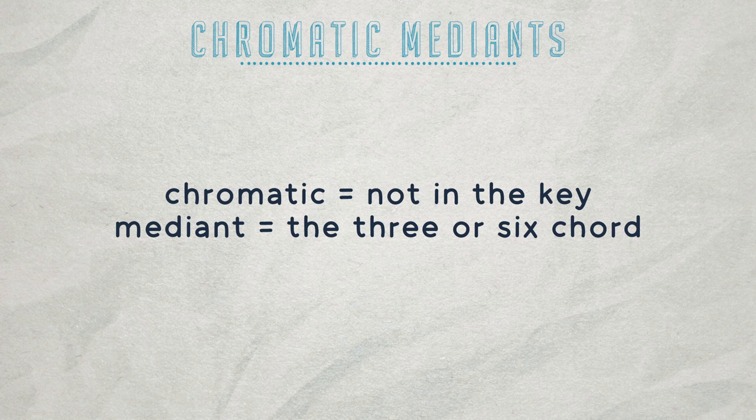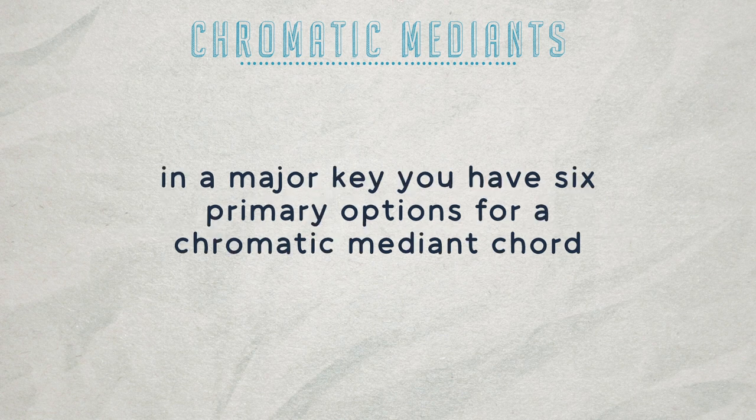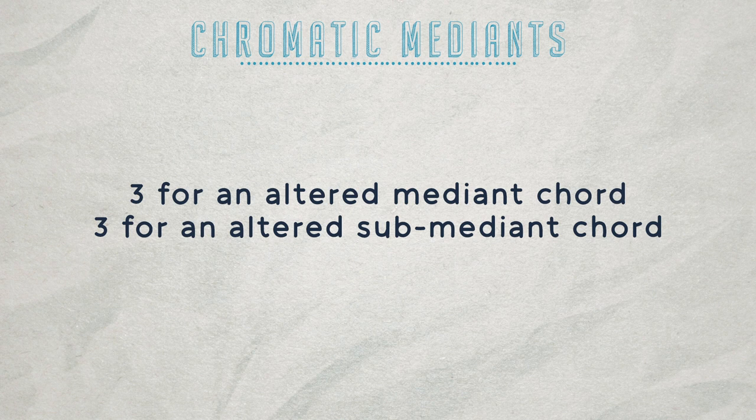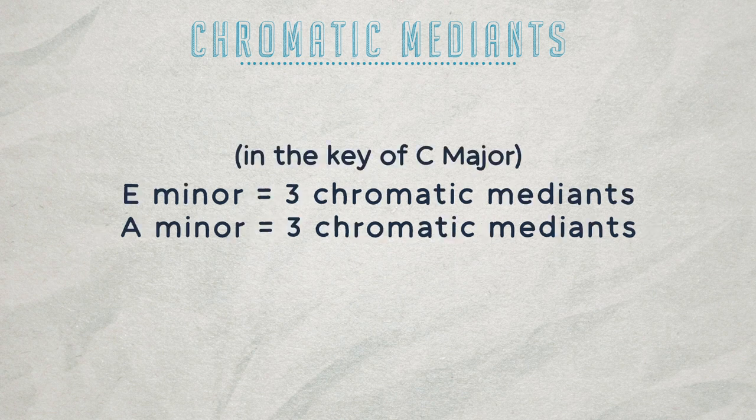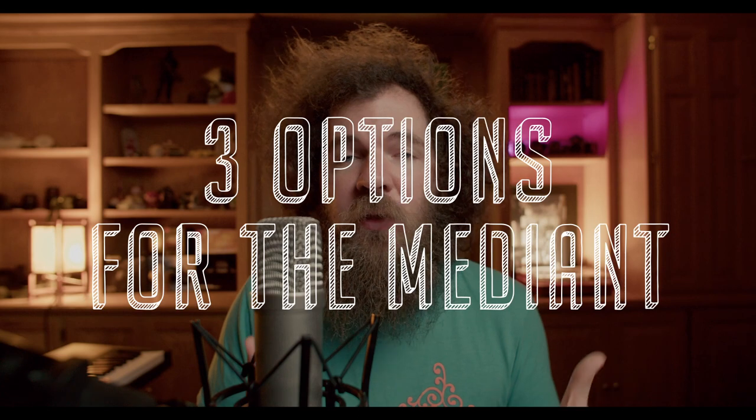Chromatic means not in the key. Mediant means the three or six chord. In any major key, you have six primary options for a chromatic mediant — three for an altered mediant chord and three for an altered sub-mediant chord, three based on E minor and three based on A minor. The easiest way to remember the six options for chromatic medians is to just memorize them. Let's start by looking at the three options for E minor.